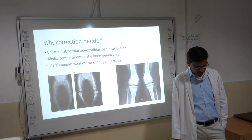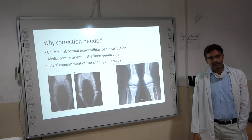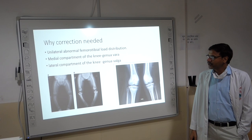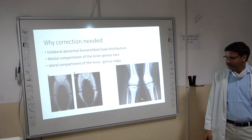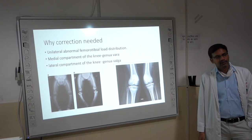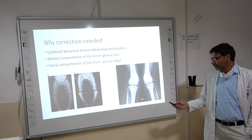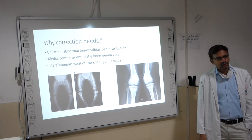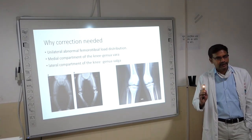Why is correction needed? In genu varum there will be more loading of the medial compartment of the knee, leading to osteoarthritis if not corrected in time. In genu valgum the lateral side will have more load distribution and the condition is also prone to patellar subluxation or dislocation. So you should try to correct the deformity.